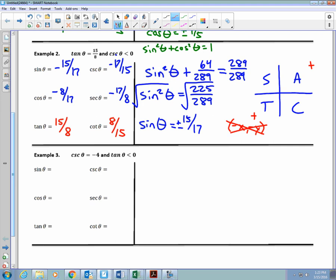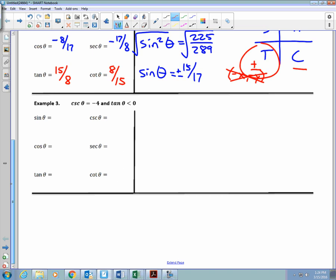So, second of all, it says cosecant is less than 0, so that means sine is negative. Cosecant and sine are negative. So, where is sine negative? Sine is negative in the third and the fourth quadrant, positive in the first and the second. So the overlap is the third quadrant. So the third quadrant tells me tangent is the only one that's positive. Cosine and sine, secant, cosecant are negative.